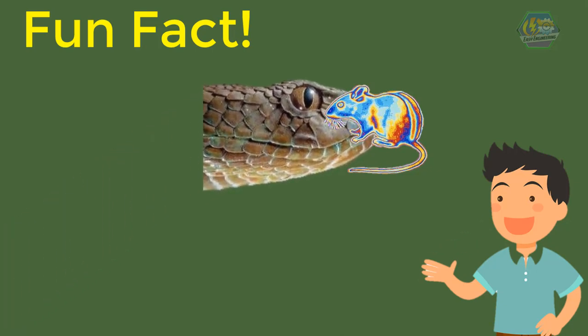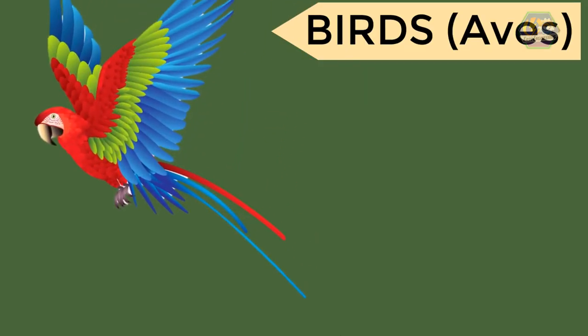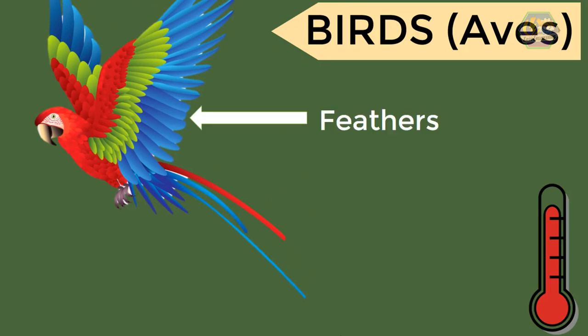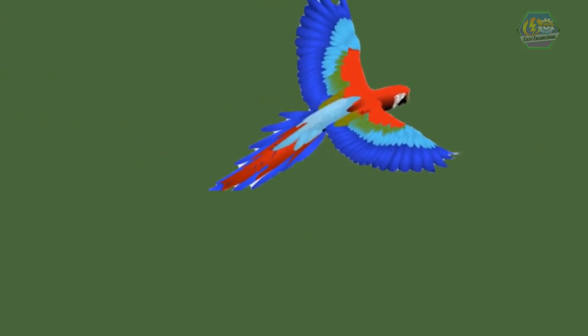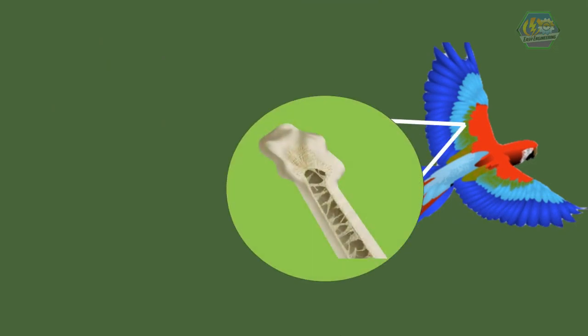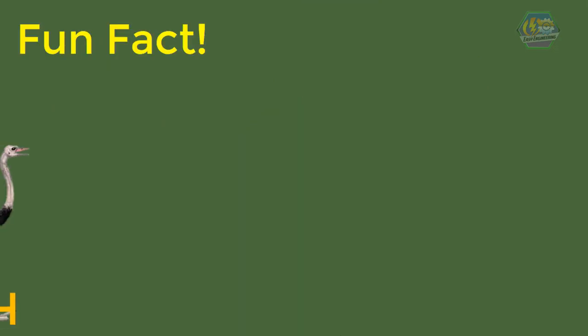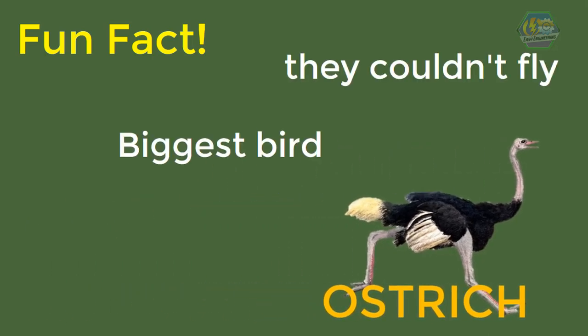Next are the Aves — the birds. They are warm-blooded animals, their bodies are covered with feathers, and they lay eggs. They have a full set of organs that could be heavy, so how do they fly? The answer lies in their bones — they have hollow bones, which makes them very light. Did you know ostriches are the biggest birds? Sadly they can't fly, but they are one of the fastest runners on land.